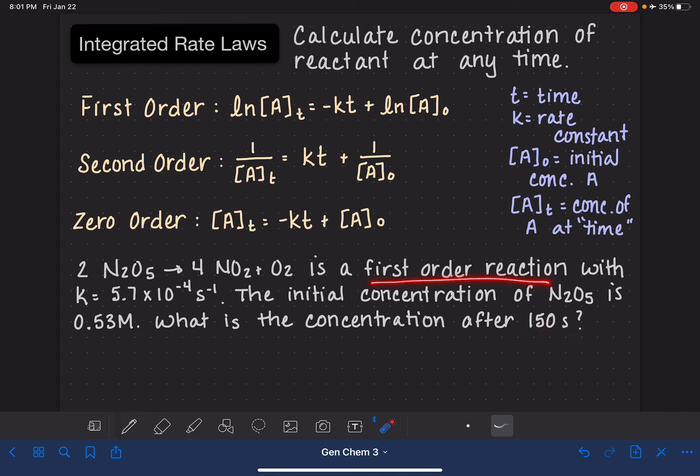Because it's a first order reaction, we have to use this equation right here. It says that the natural log of the concentration of A at the time in question, for us it's 150 seconds. Sometimes people will write that in the subscript, 150, but a lot of times people just leave it as T.